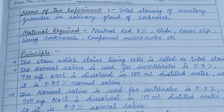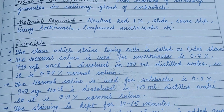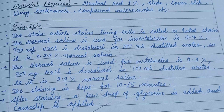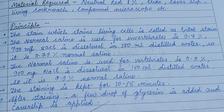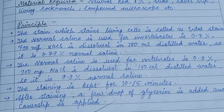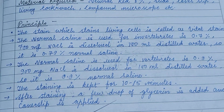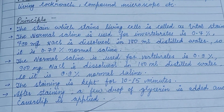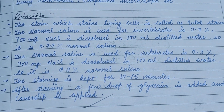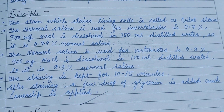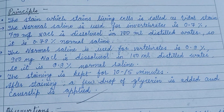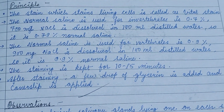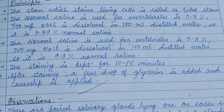It is included in the BSC practical zoology. The stain which stains living cells is called a vital stain. For invertebrates, it is used as 0.7%, prepared as 700mg of NaCl dissolved in 100ml of distilled water, giving 0.7% normal saline. For vertebrates, it is 0.9%, as 900mg NaCl is dissolved in 100ml of distilled water, giving 0.9% normal saline.